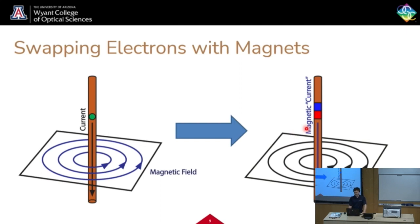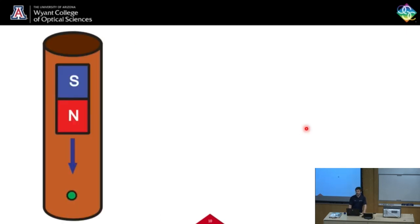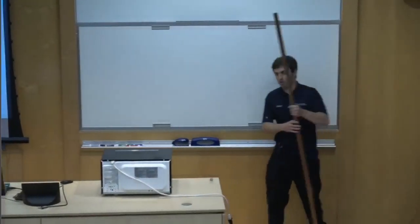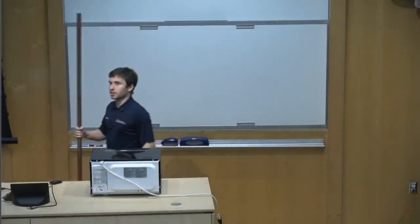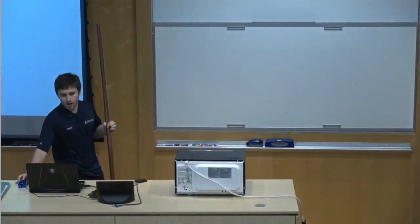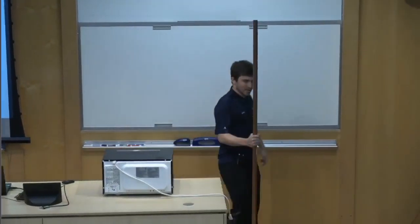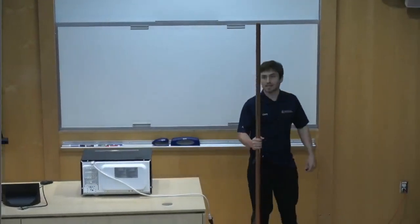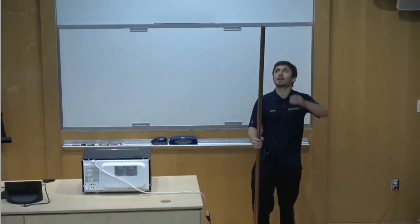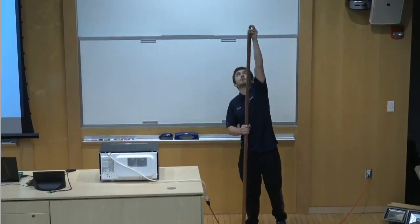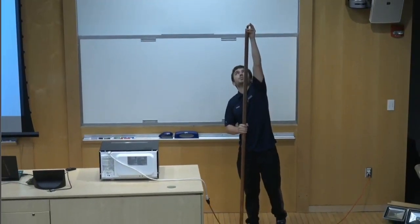Now I have a demo with this. We're going to be using this copper tube. Just like in this drawing, we're going to be dropping a magnet down it. Now, if you can guess what's going to happen, that's going to create an electric field. So if we drop it in, let's see what happens. Three, two, one, drop.